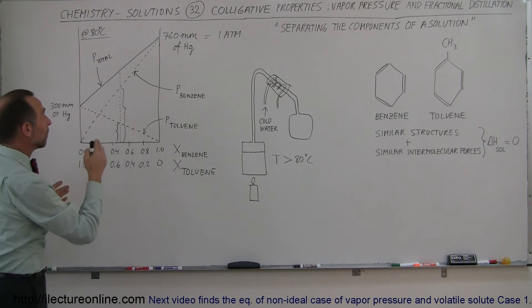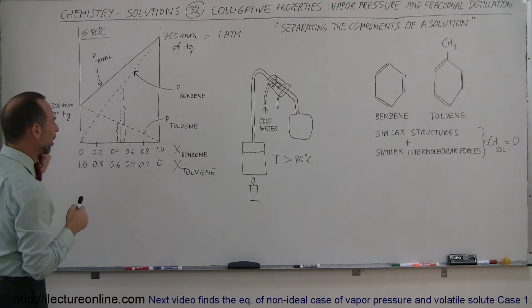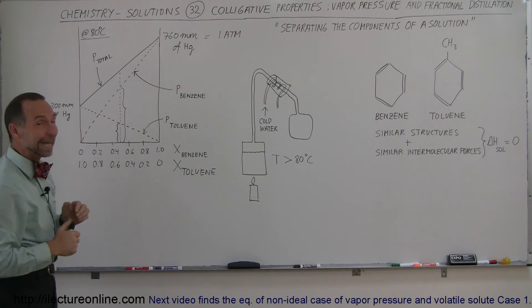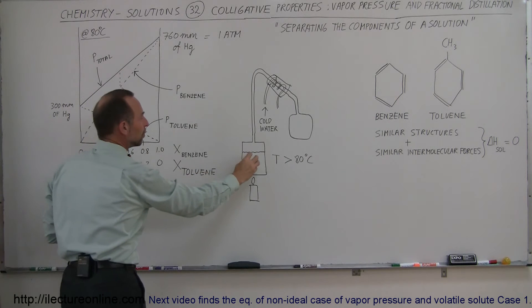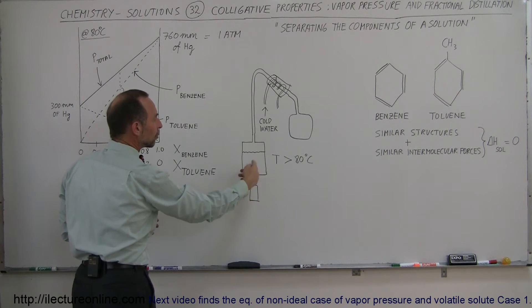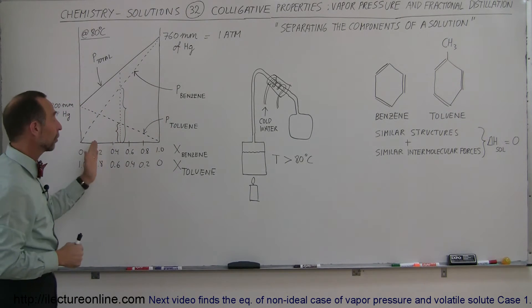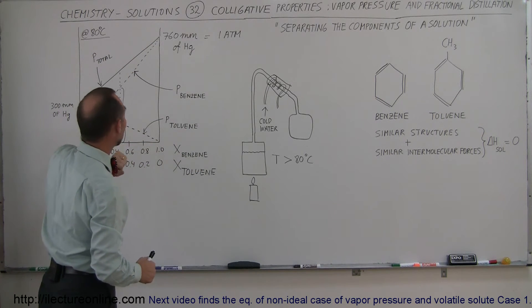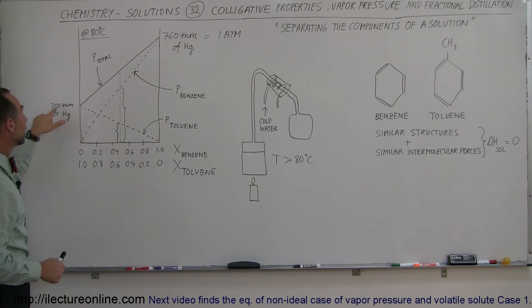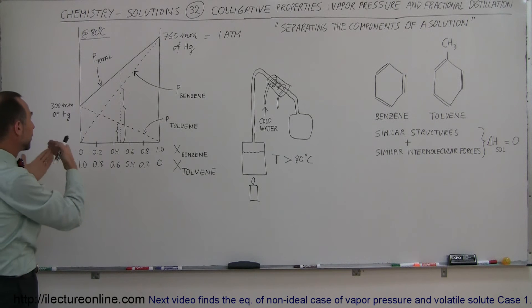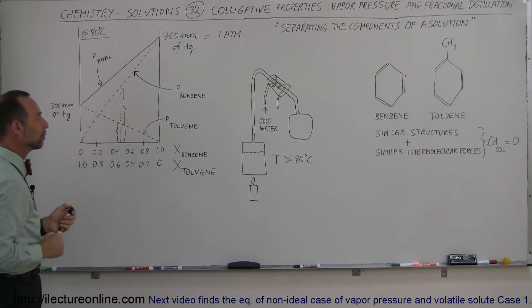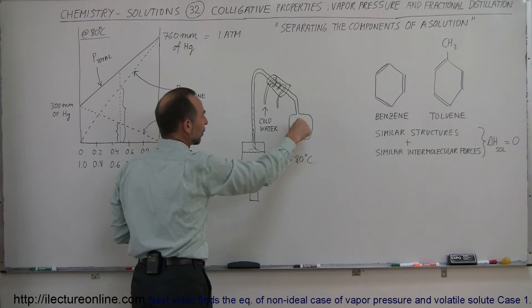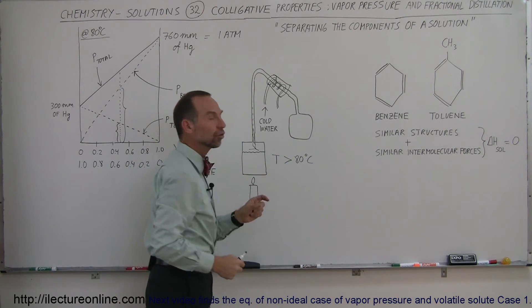Since benzene and toluene have different boiling points — toluene is about 110 degrees centigrade and benzene is just over 80 degrees centigrade — when you have a solution of both and heat it to about 80 degrees centigrade, the benzene in the solution will begin to boil and go into vapor phase. Only a small amount of toluene will go into vapor phase, so most of the vapor that travels up the tube and is collected will be mostly benzene and just a small amount of toluene.